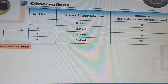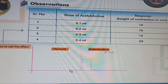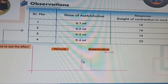Here is the observation table. When we administered acetylcholine at a dose of 0.1 ml, the height of contraction is 30 mm. The straight baseline represents when no drug is administered, and after administration of the drug, the graph moves in an upward direction, attaining a height of 30 mm.